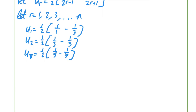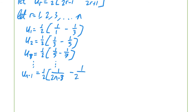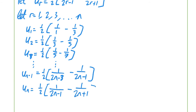I can already see what's going to start cancelling out — it cancels on alternate lines. I'll write the last two terms clearly: u_{n−1} = one half times [1/(2n−3) minus 1/(2n−1)], and u_n = one half times [1/(2n−1) minus 1/(2n+1)].